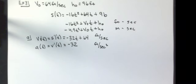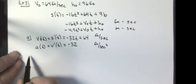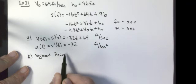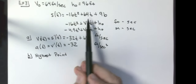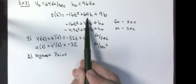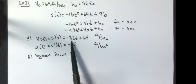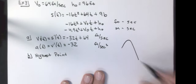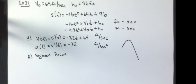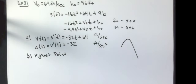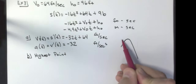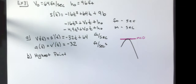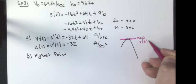Part B asks: what is the highest point above the river reached by the stone? I could have asked that question last year, and you would have used negative B over 2A to find the vertex. But think about this — the velocity at the highest point is the derivative of this curve, which is the tangent to the curve at the highest point. What is the slope there? Zero. Which means I want to find out when my velocity equals zero.